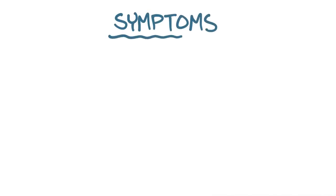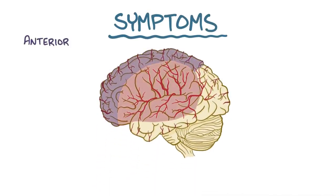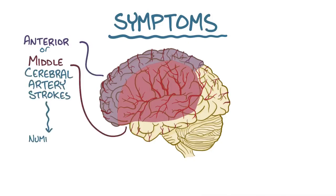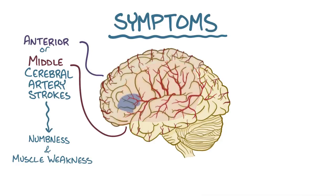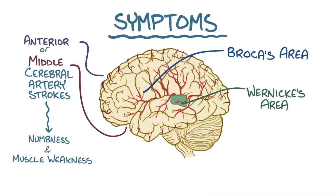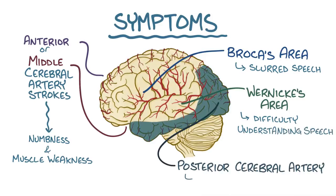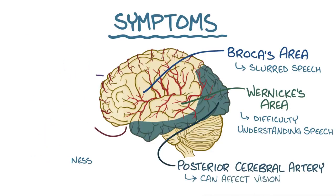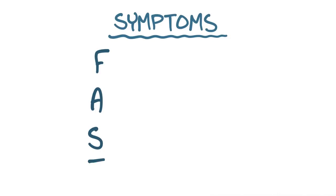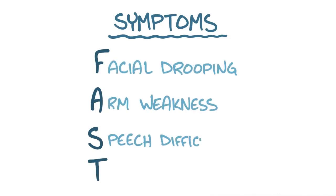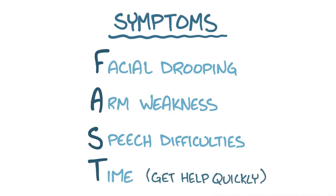Stroke symptoms depend on the exact part of the brain that is affected. For example, an anterior or middle cerebral artery stroke can cause numbness and sudden muscle weakness. If a stroke affects Broca's area, which is usually in the left frontal lobe, or Wernicke's area, which is usually in the left temporal lobe, then it can cause slurred speech or difficulties understanding speech respectively. If there's a posterior cerebral artery stroke, it can affect vision. An acronym to remember some common stroke symptoms is FAST: Facial drooping, Arm weakness, Speech difficulties, and Time — a reminder to get help as quickly as possible to minimize cell injury and maximize the chance of a full recovery.